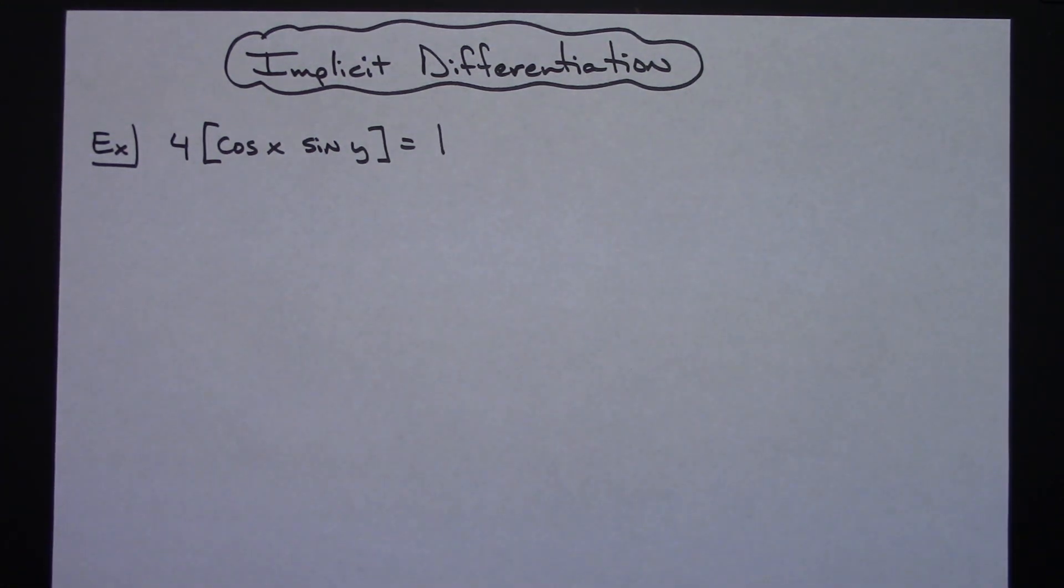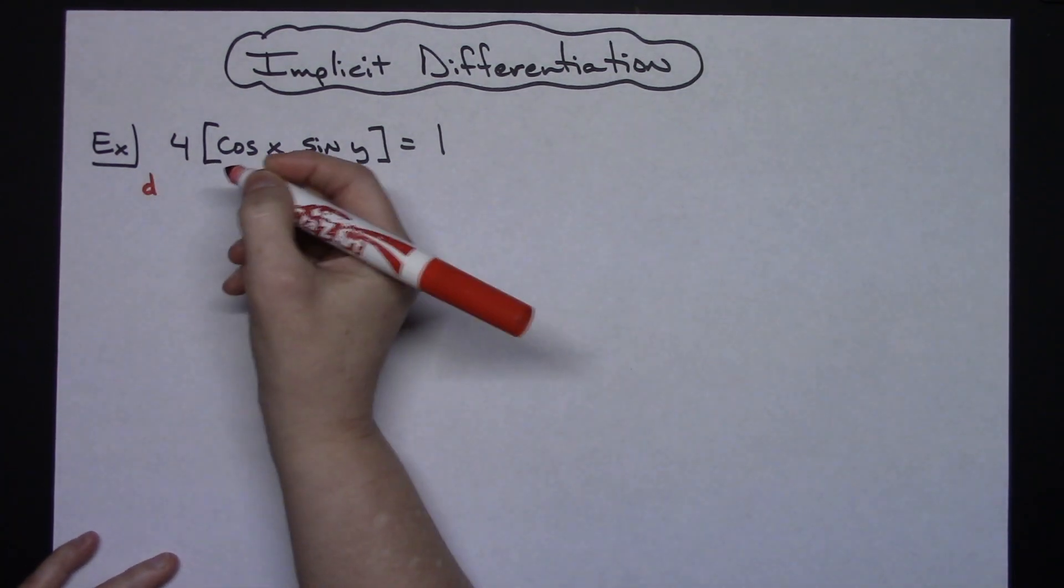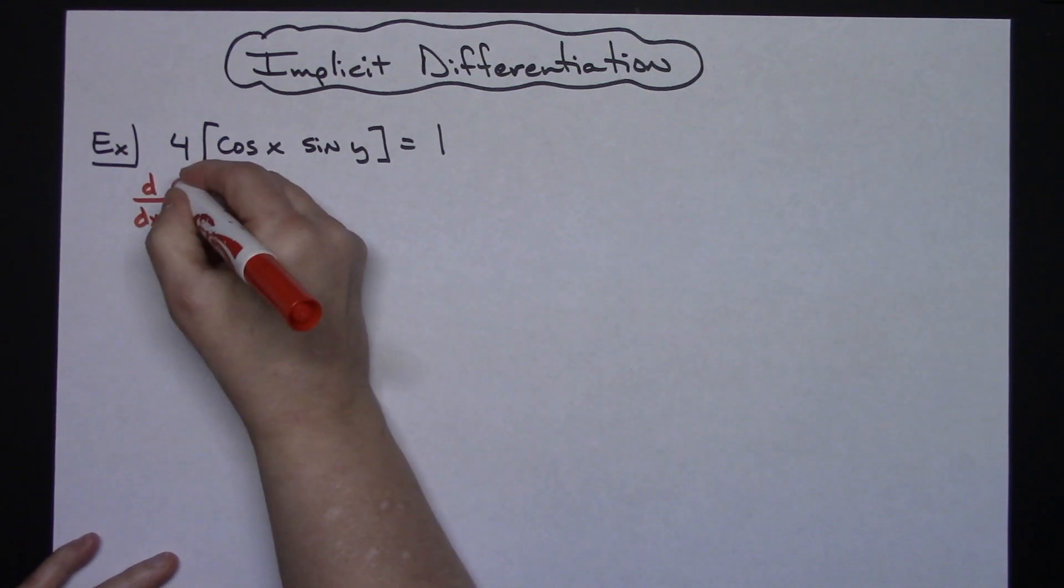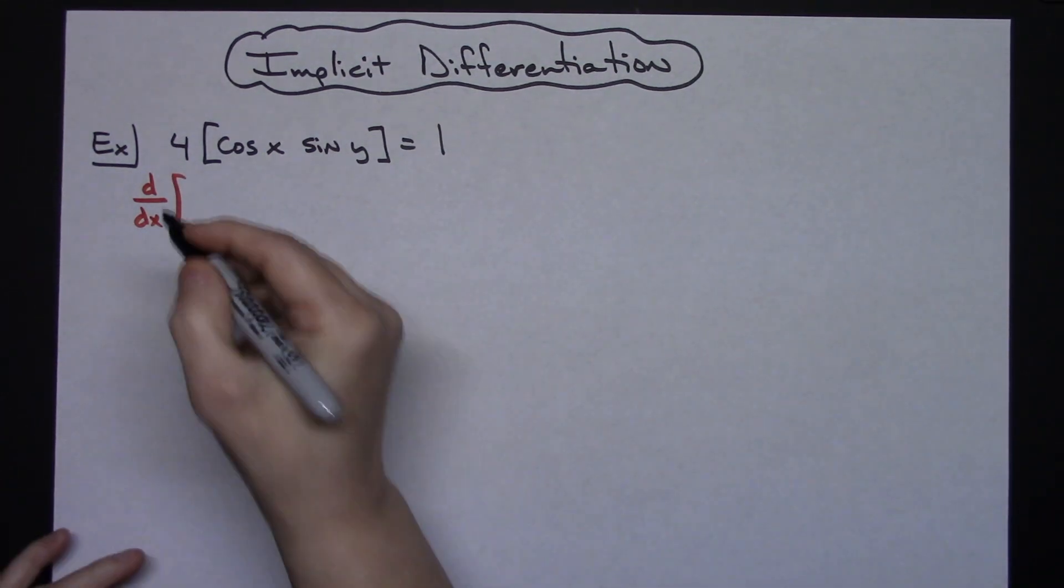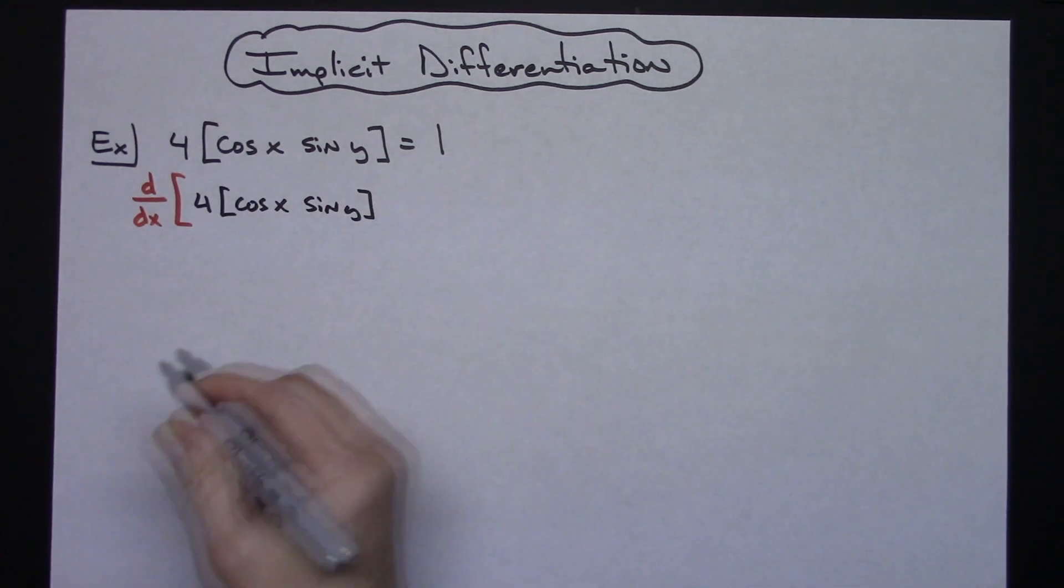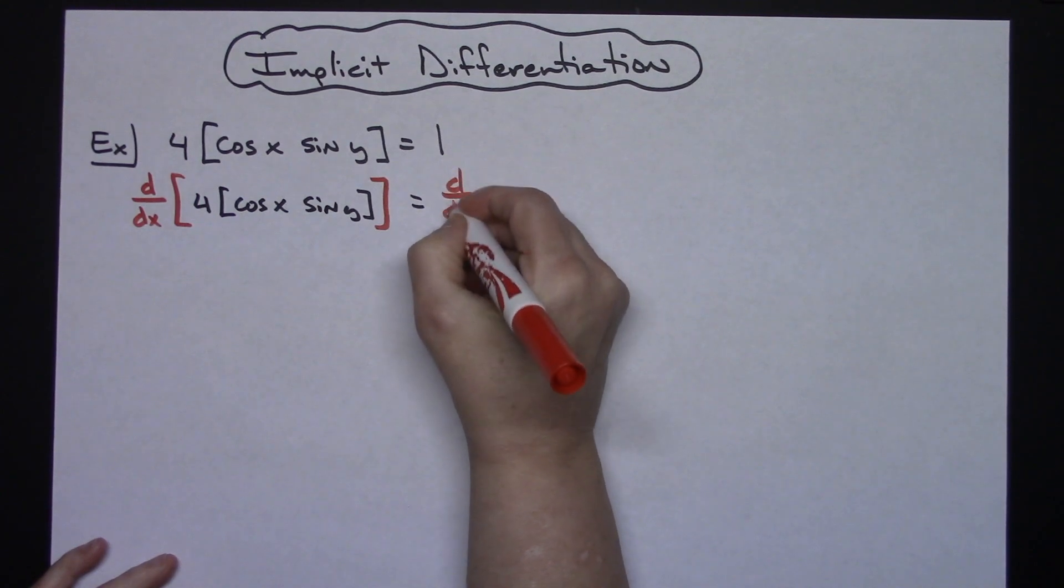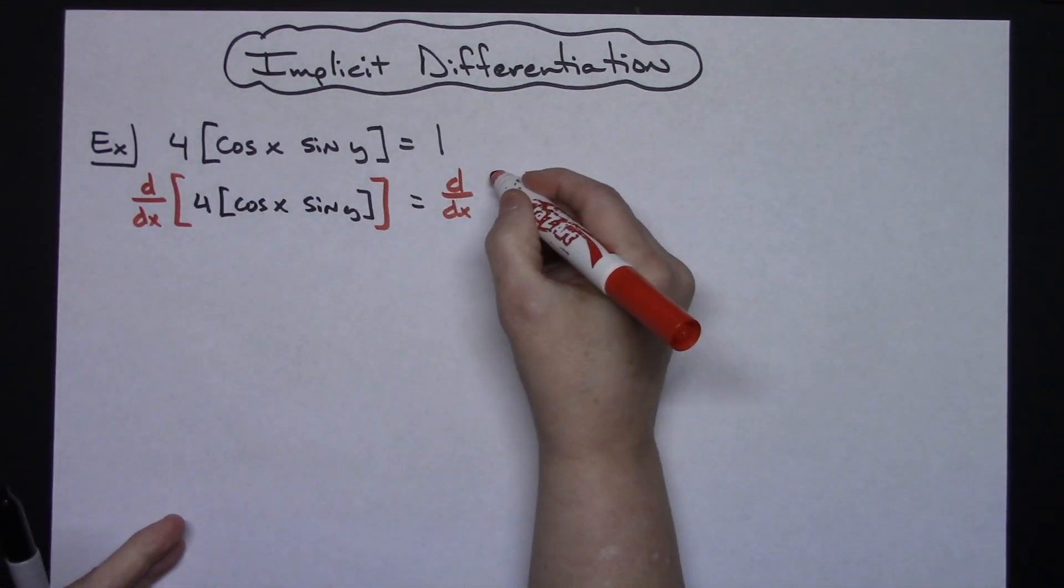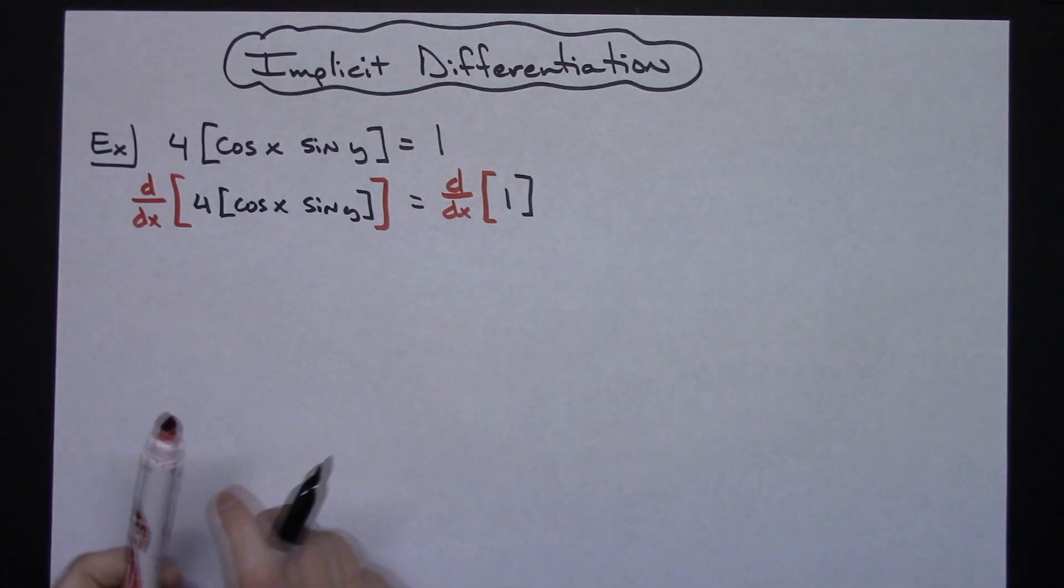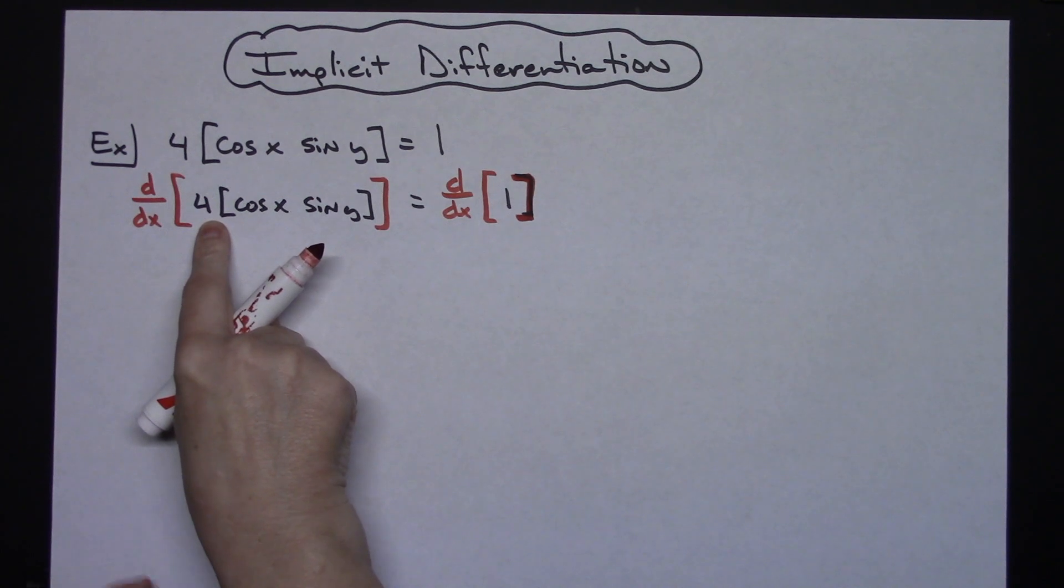All right so for starters, there's nothing algebraically here that I need to do any type of simplifying, so that means I'm going to take the derivative of both sides right away. I'm going to show that I'm taking the derivative by showing d/dx around that left hand side. For cosine x sine y, that's just telling the person that's looking at your work, hey you're getting ready to take the derivative of both sides. Now this right here I've got a constant out here in front so I can ignore that until much later in the problem. I just need to focus on this right here.